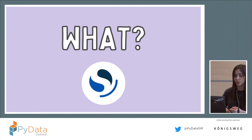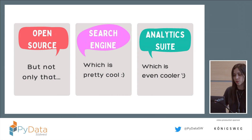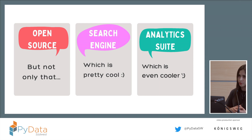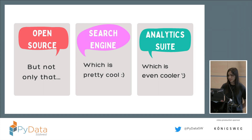So what is OpenSearch? As you can hear in the name, 'open' is actually open source. It means you can download it, try it out, change the code, and contribute back to the project. If you know Elasticsearch, OpenSearch is a direct fork of Elasticsearch version 7.10. If you are familiar with Elasticsearch, you will be familiar with OpenSearch as well, but now they are different projects.